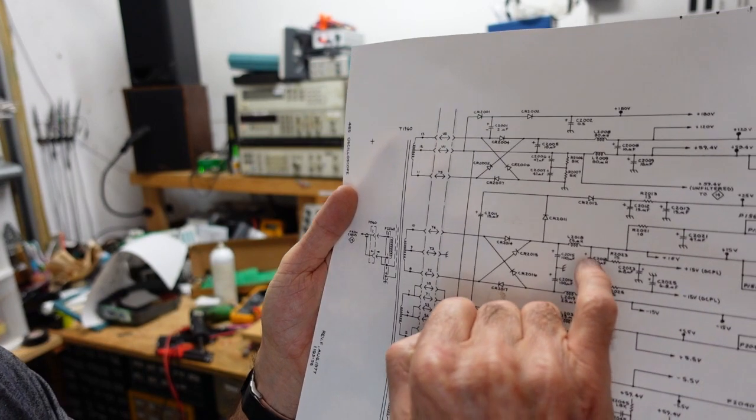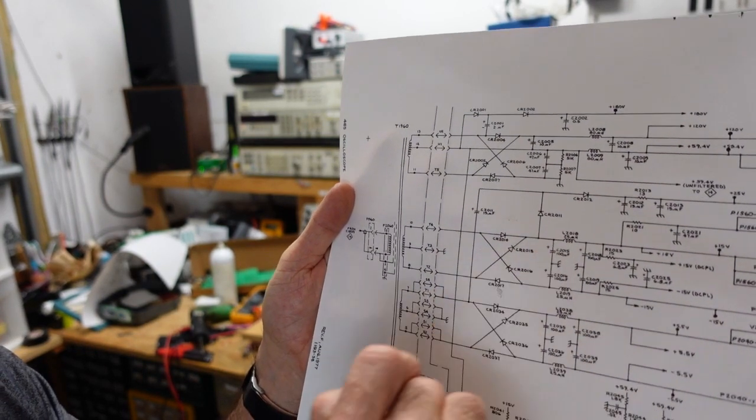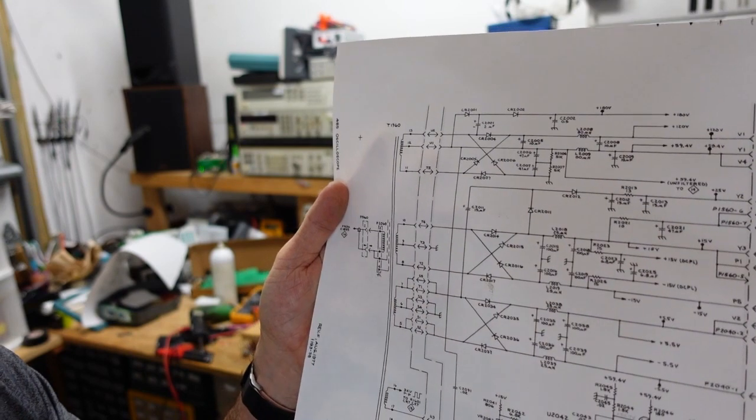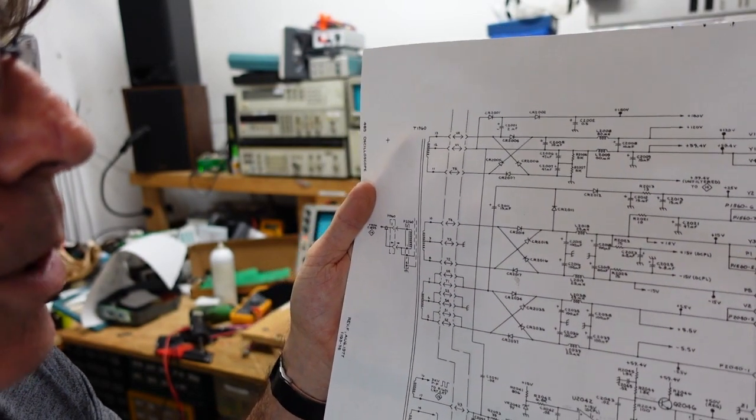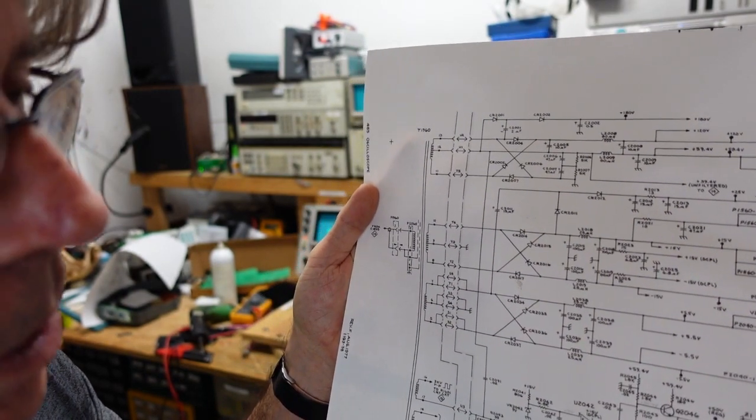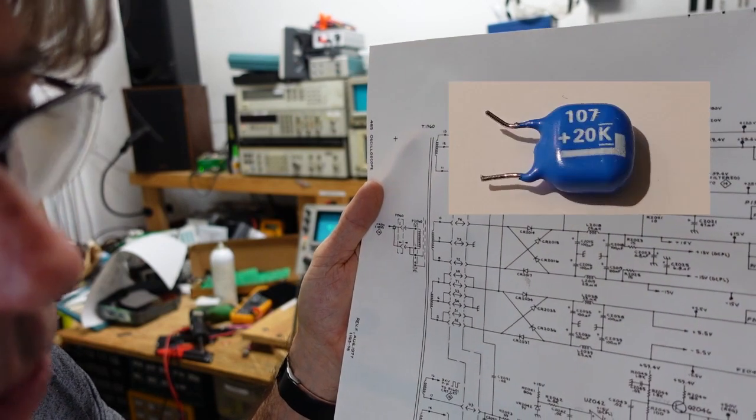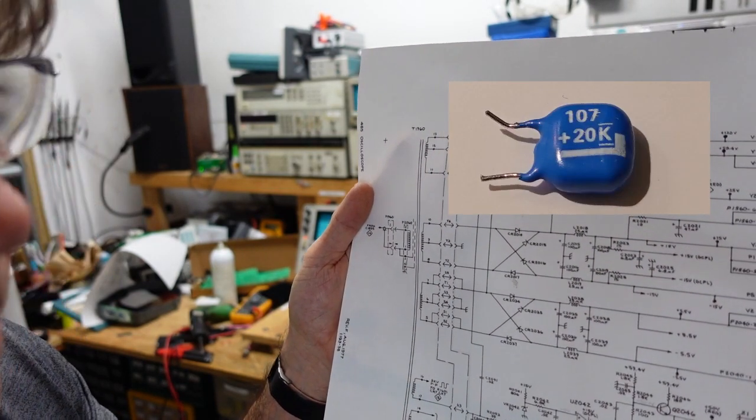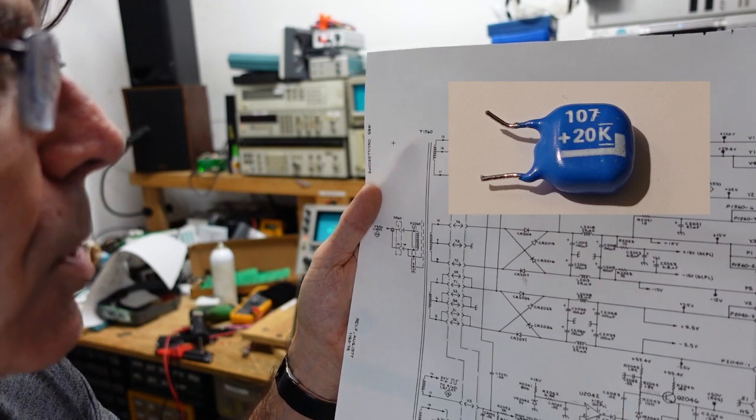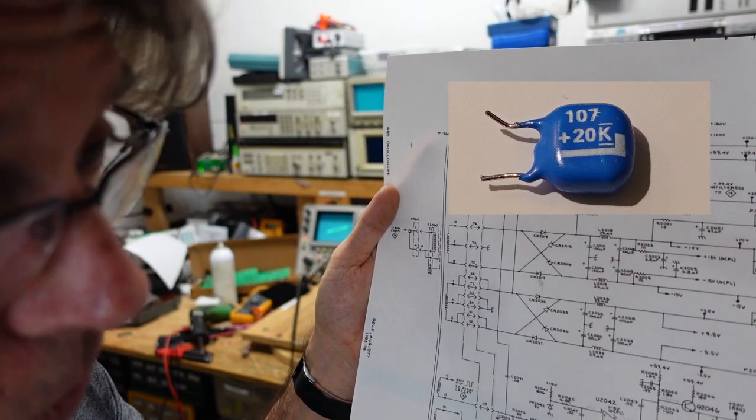Now this is an electrolytic, but this is a tantalum, and I'm going to post a picture of it here so you can see it because it looks different than the orange dipped ones we're used to seeing. They're kind of oval, egg shape. This one was not, however it was just as shorted as the others.